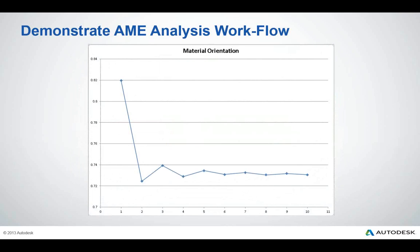We can see some information about how material orientation can be affected by not having the proper number of elements through the thickness. On the y-axis we have the material orientation value, which ranges from 1 to 0.33 as a lower bound. A value of 1 signifies orientation in the flow direction, while 0.33 represents a completely isotropic orientation. As we increase the number of elements through the thickness, we converge on a more accurate value for the material orientation.